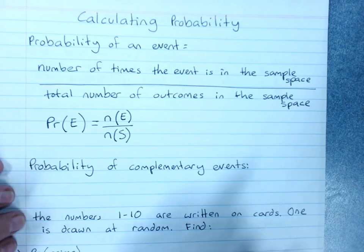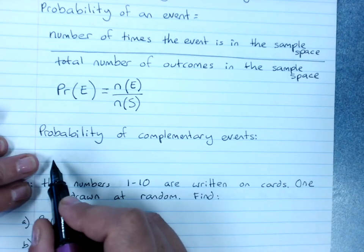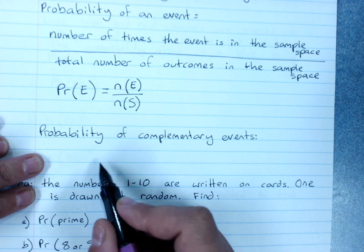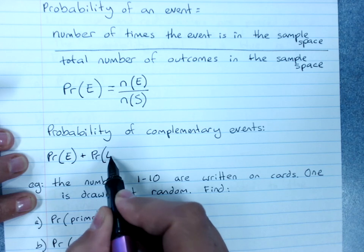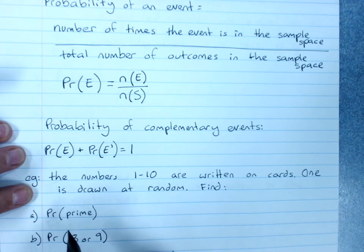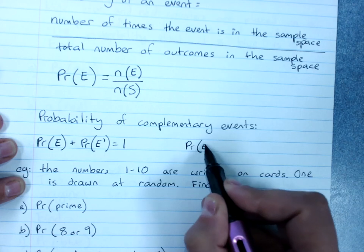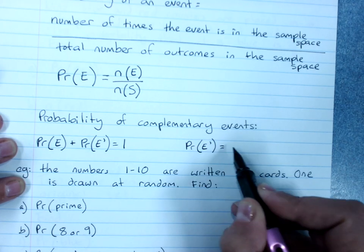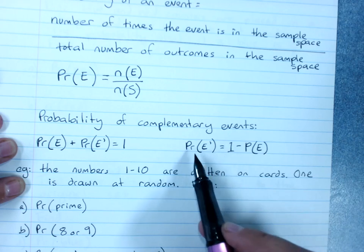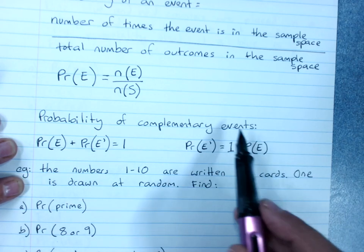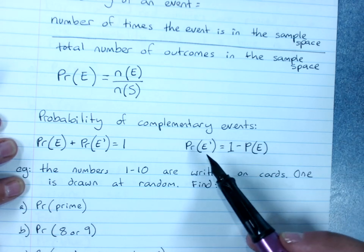We also need to be able to find the probability of complementary events. Now you'll remember that the probability of an event happening and of it not happening must add up to 1. So the probability of E plus the probability of E not happening must be 1. That means if you want to find the probability of the event not happening, probability of the complement of the event, that will be 1 minus the probability of the event. We'll use this later and you'll see how it works, because I know this notation is a little bit confusing. And you don't have to use this. You can just remember how to get the probability of a complementary event. That will be fine.